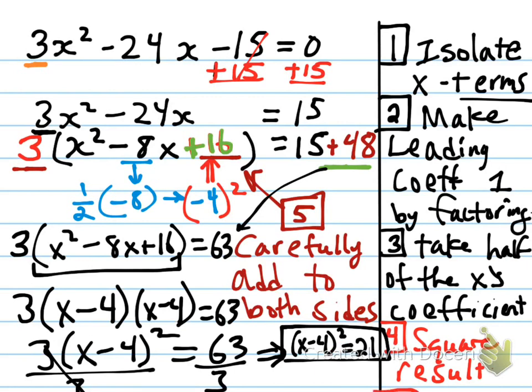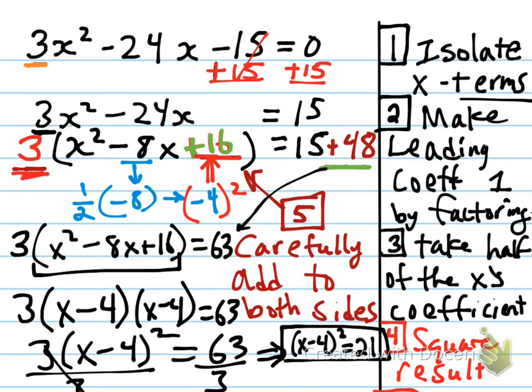So to quickly summarize: isolate your x terms — that's what we did first. Make the leading coefficient 1 by factoring — that's what occurred next. Take half of the x's coefficient, square the result. And then carefully add to both sides — I added 16 inside the parentheses, but I really added 3 sixteens, hence 48. All right, that about wraps it up. I will see you in class tomorrow. Hope this helps.